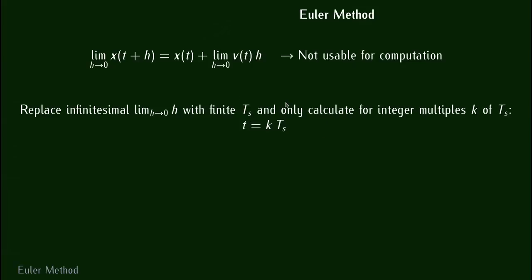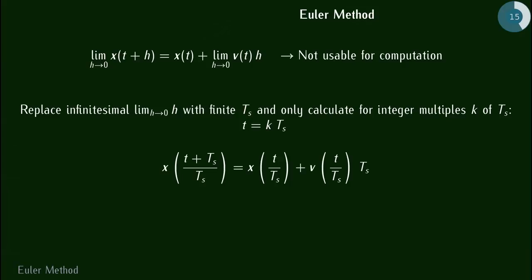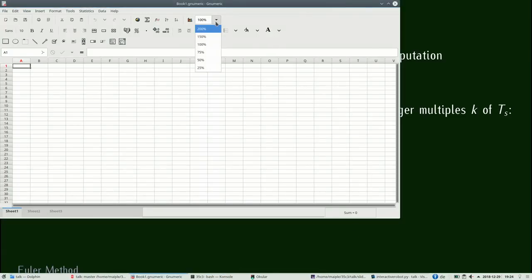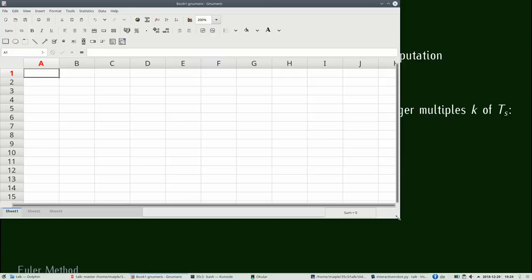Notre instant T sera un entier K multiplié par notre pas de temps. On va se retrouver à devoir discrétiser notre espace de temps pour faire nos calculs. Une fois que c'est discrétisé, on obtient : X(K+1) est égal à X(K) plus la vitesse à K multipliée par le pas de temps. Dans un logiciel, ça peut être implémenté par une boucle où vous appliquez cette formule à chaque pas de temps pour obtenir le prochain.